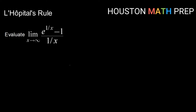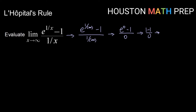Let's check out a few more. Here we have the limit as x goes to infinity of (e^(1/x) − 1)/(1/x). Trying to evaluate: as x → ∞, 1/x → 0, so e^(1/x) → e^0 = 1, giving us 1 − 1 = 0 in the numerator. And 1/x → 0 in the denominator. So we again get the 0/0 indeterminate form.